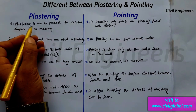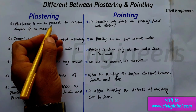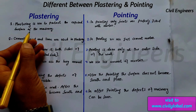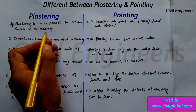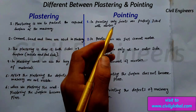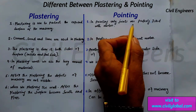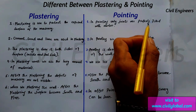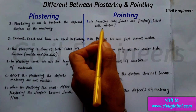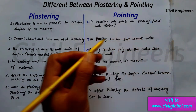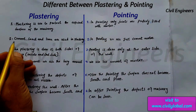First, plastering is used to protect the exposed surface of masonry. In pointing, only joints are properly filled with mortar.